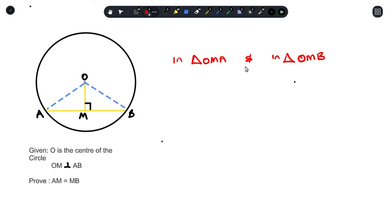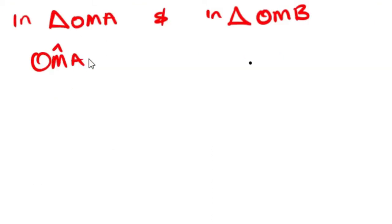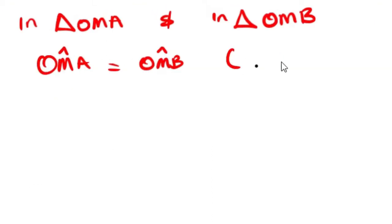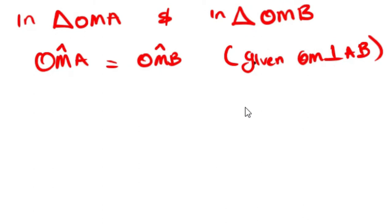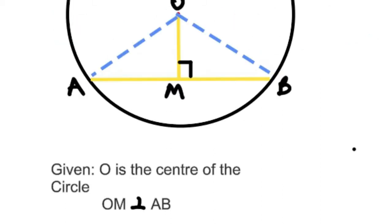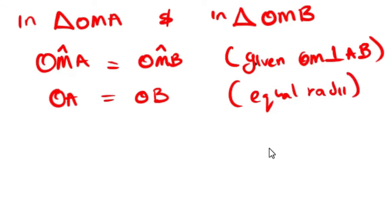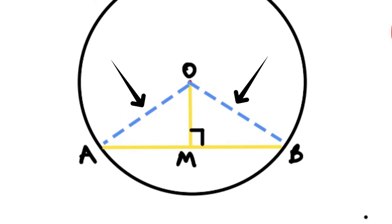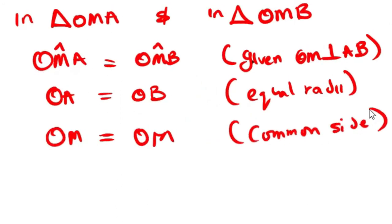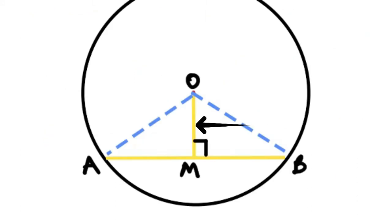Now if we're able to prove that angle OMA and angle OMB are equal to 90 degrees, the reason for that is because it was given that OM is perpendicular to A. The second statement that is true is OA equals to OB because they are both radiuses.